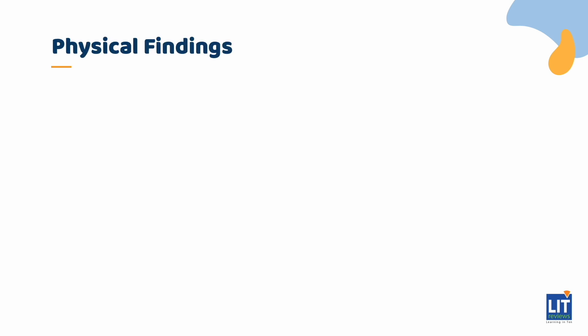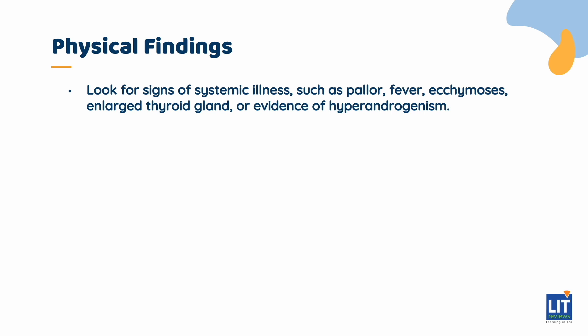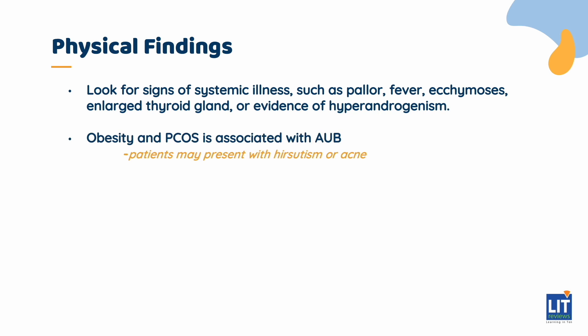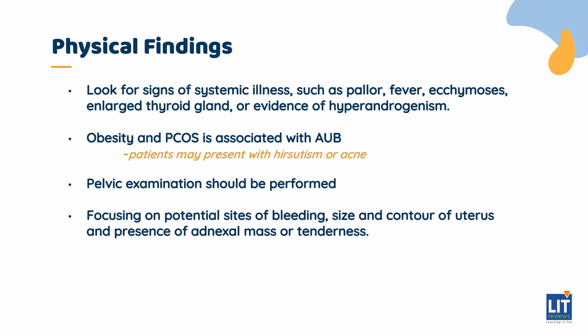Physical findings: the goal of the physical examination is to look for systemic illness such as pallor, fever, ecchymosis, enlarged thyroid gland, or evidence of hyperandrogenism. For example, obesity and PCOS are associated with AUB, and patients may present with hirsutism or acne. A complete pelvic examination should be performed, with particular focus on potential sites of bleeding, size and contour of the uterus, and presence of adnexal mass or tenderness.